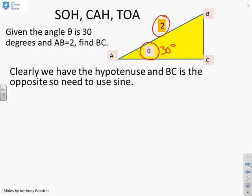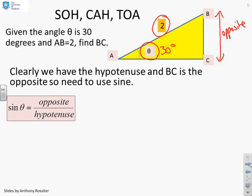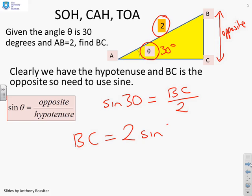Well, clearly, in this particular case, because we've got the hypotenuse, and because we've got the angle theta, and we're being asked to find what would be considered the opposite, then clearly the formula we need is the sine rule. Sine theta equals opposite over hypotenuse. So I'm going to write sine of 30 equals BC over 2, or BC equals 2 sine 30.